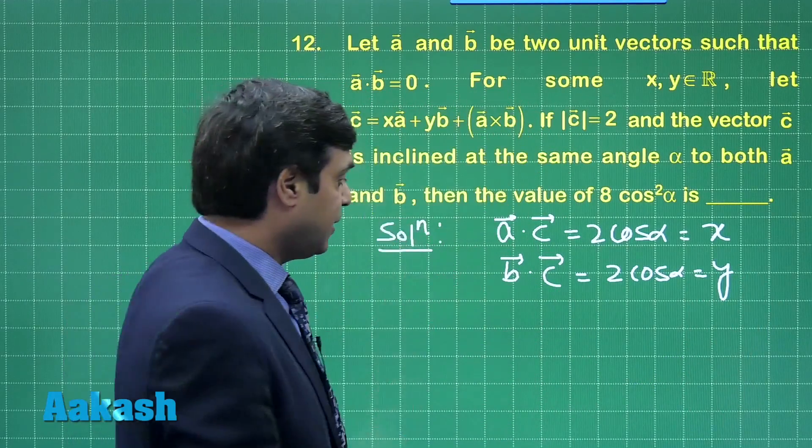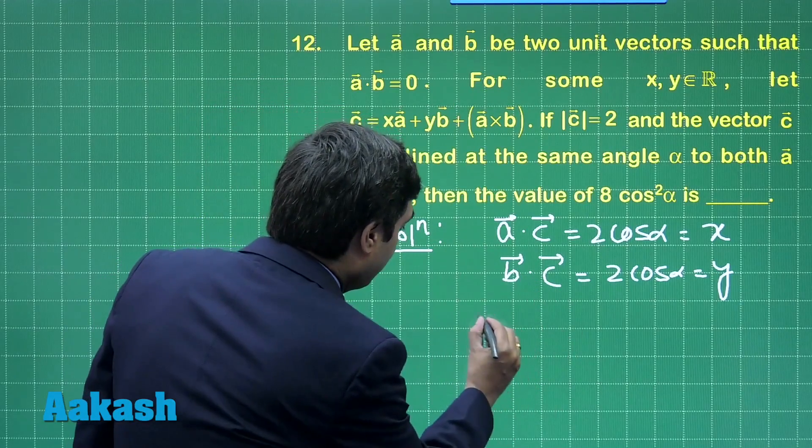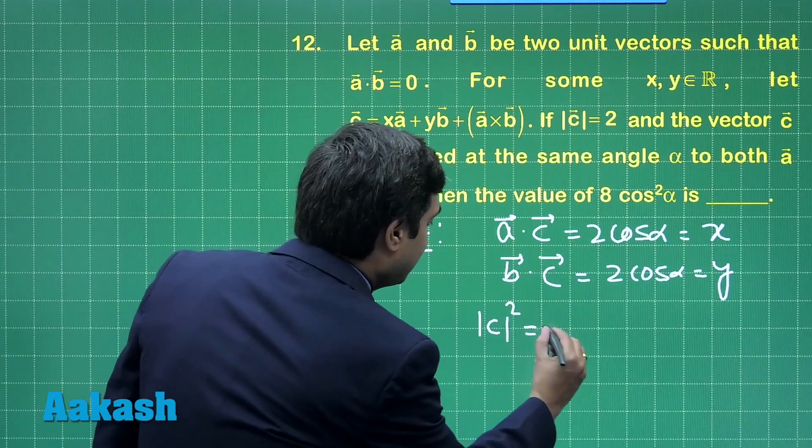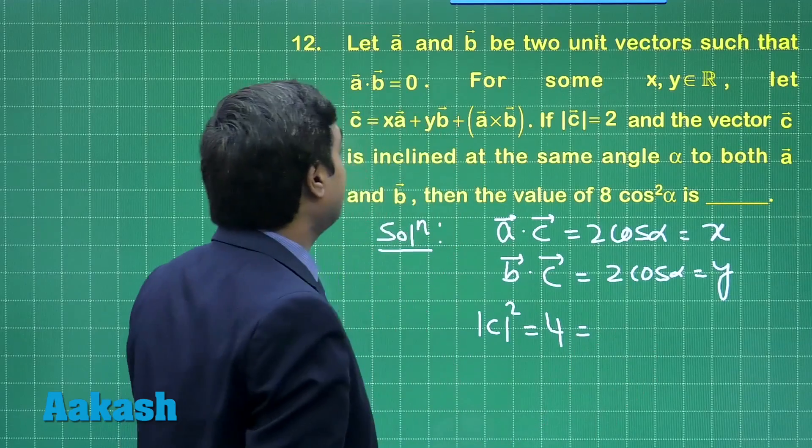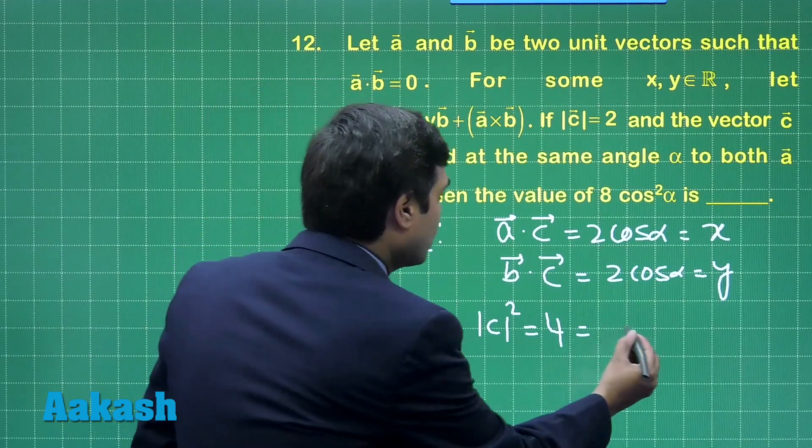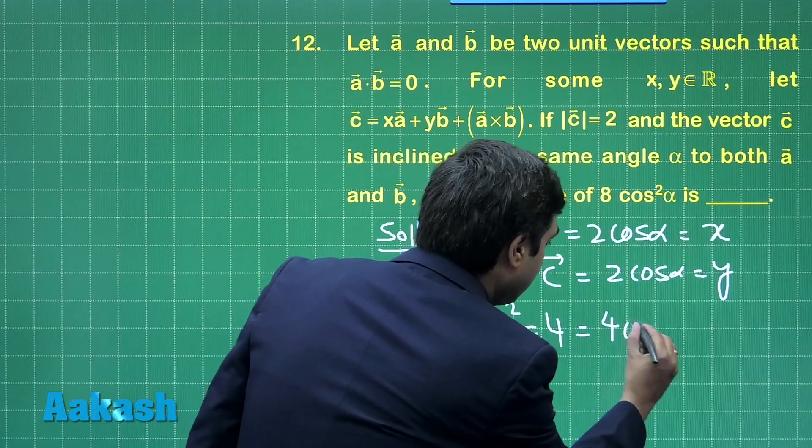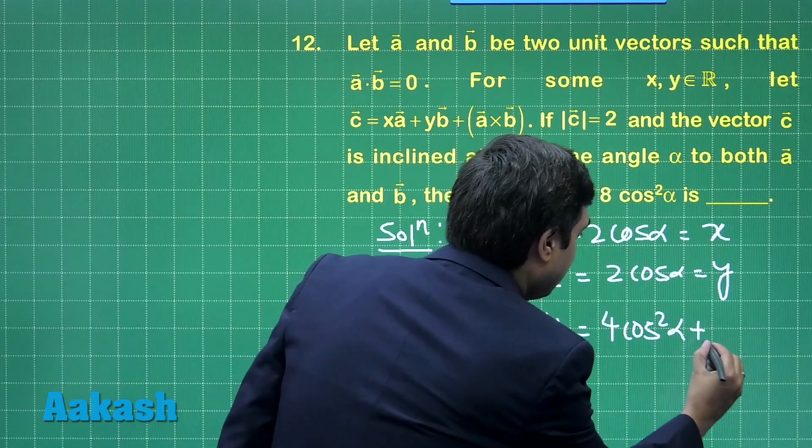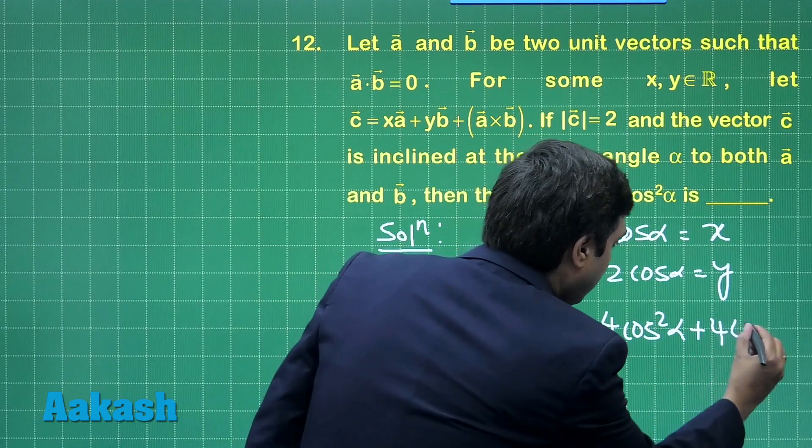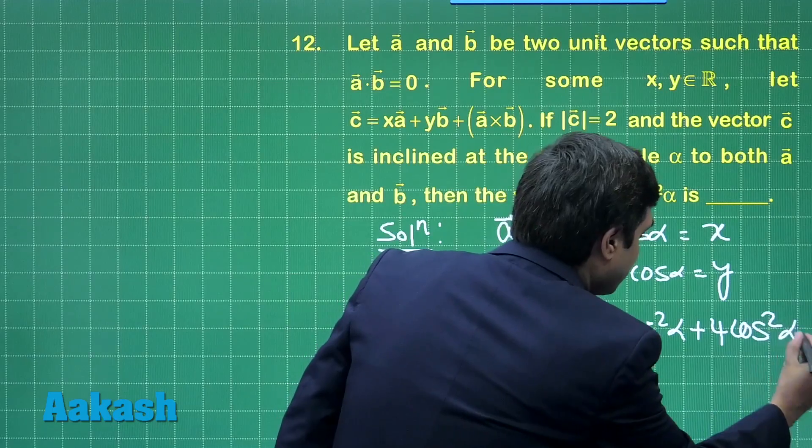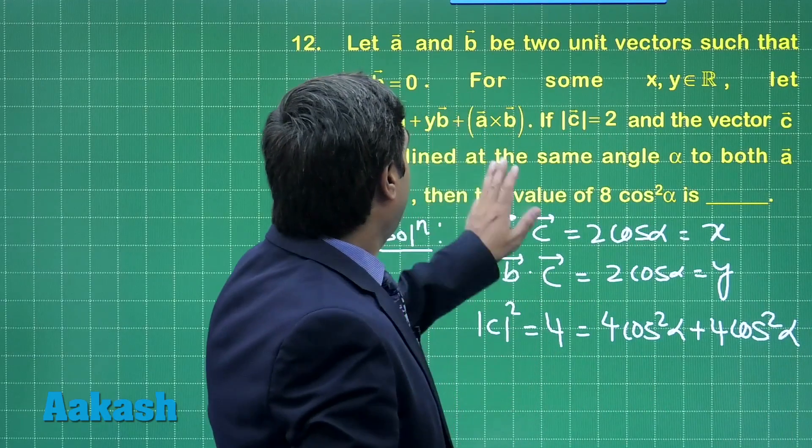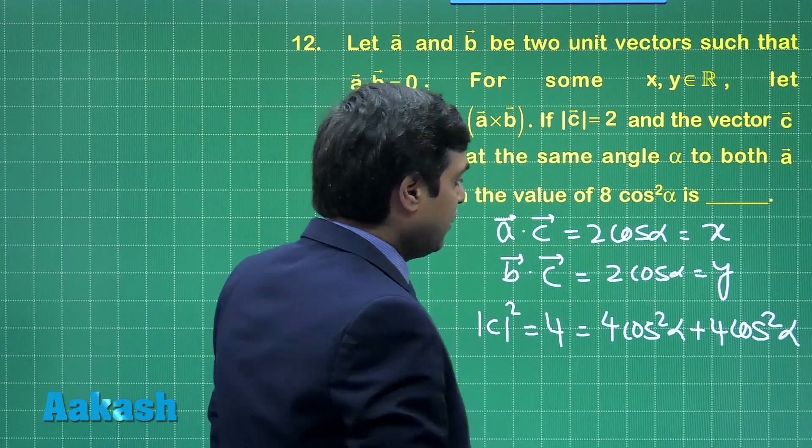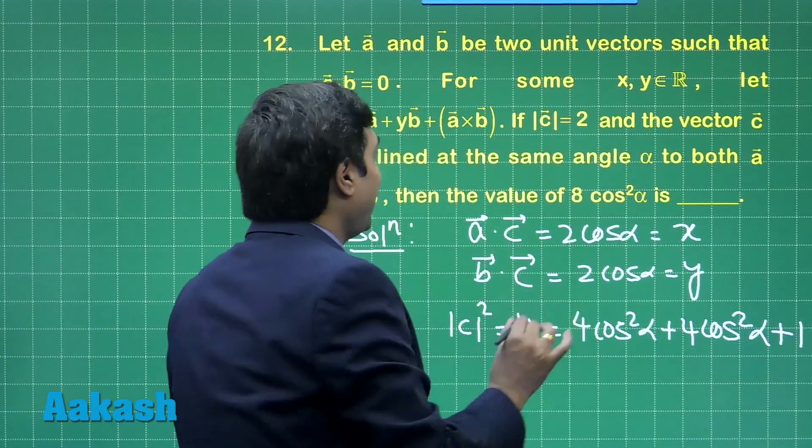Now, taking modulus of this c, we obtain mod c square. Let us say this is 4, given to us, is equal to x square, that is 4 cos square alpha, plus 4 cos square beta, plus 1.